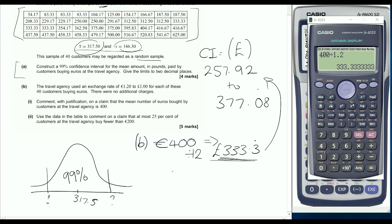Yes, it is. So we're going to say that the claim is likely to be true since the 400 euros lies in the confidence interval. It's lying within that confidence interval, so it's most likely that the claim can be accepted and is true, because the 400, which is 333 pounds, does lie within our confidence interval.